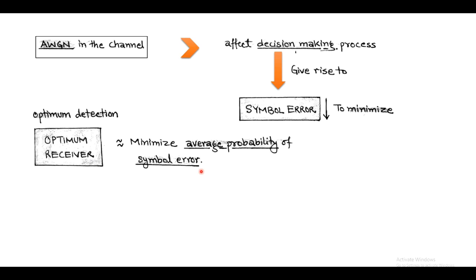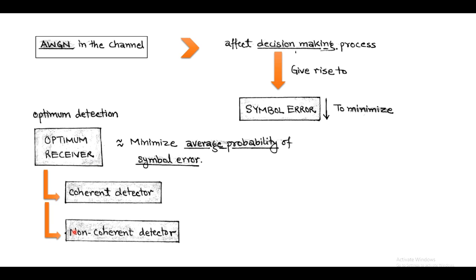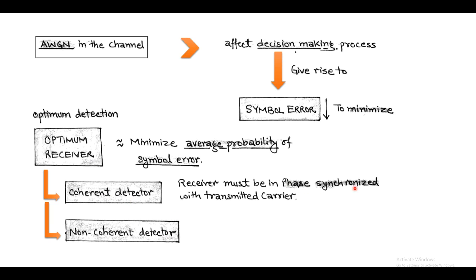There are basically two types of optimum receiver: one based on coherent detection and one based on non-coherent detection. In a coherent detector, the receiver must be synchronized in phase with the carrier at the transmitter side. In the case of a non-coherent detector, there is no requirement of phase synchronization.